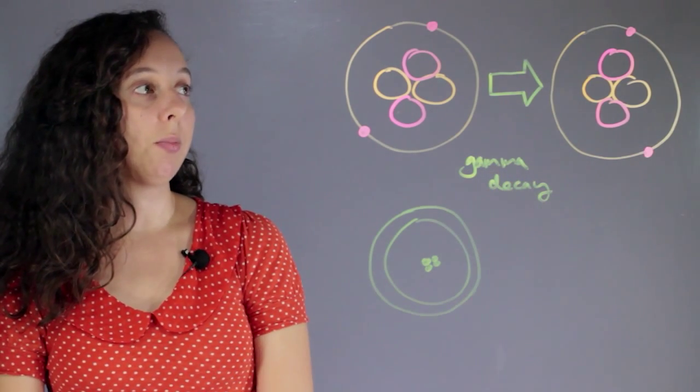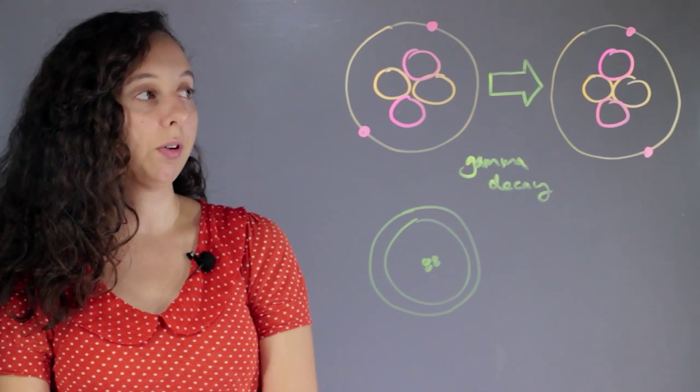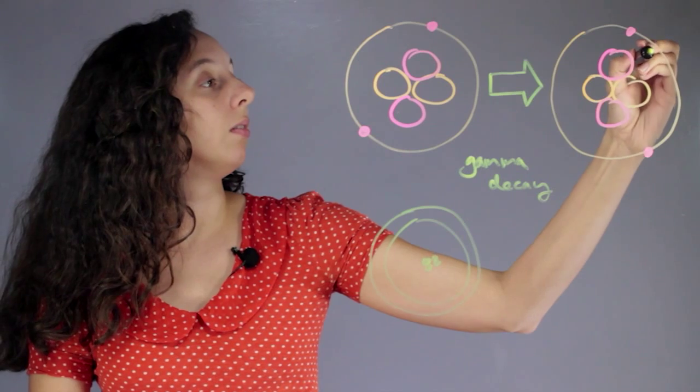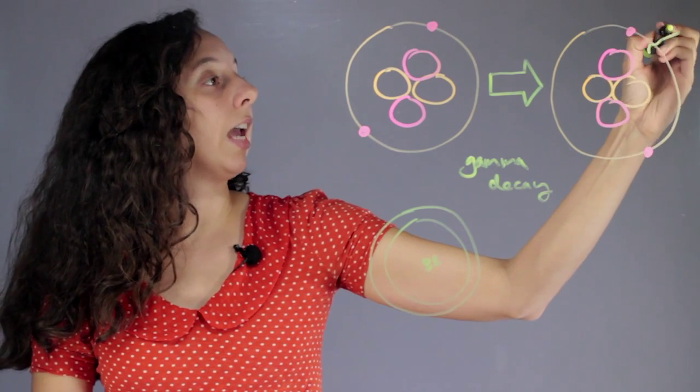Well actually this number of electrons, neutrons and protons stays the same except it also lets out a gamma particle.